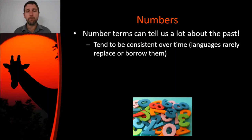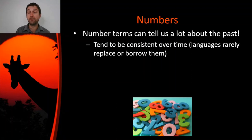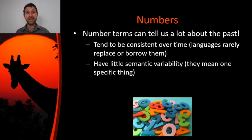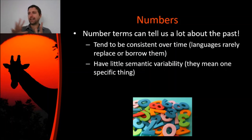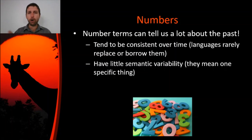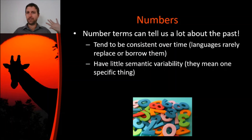Another reason numbers are good for studying language history is that they have little semantic variability. Words can change meaning in ways that complicate reconstruction, but numbers are very consistent in their semantic content — not just in that they won't be borrowed, but also semantically. One is probably going to mean one, two is probably going to mean two, three is probably going to mean three. Although there are certain things you can do with numbers, like with the number one that we'll see in a later Safari, generally speaking they're pretty consistent semantically.